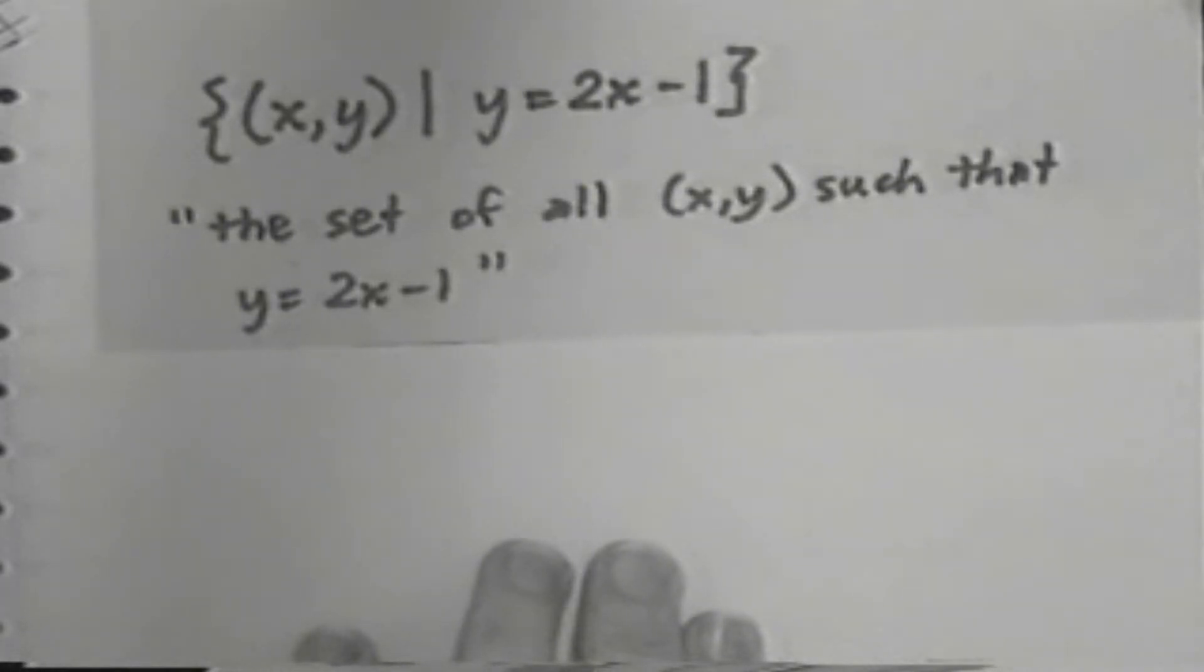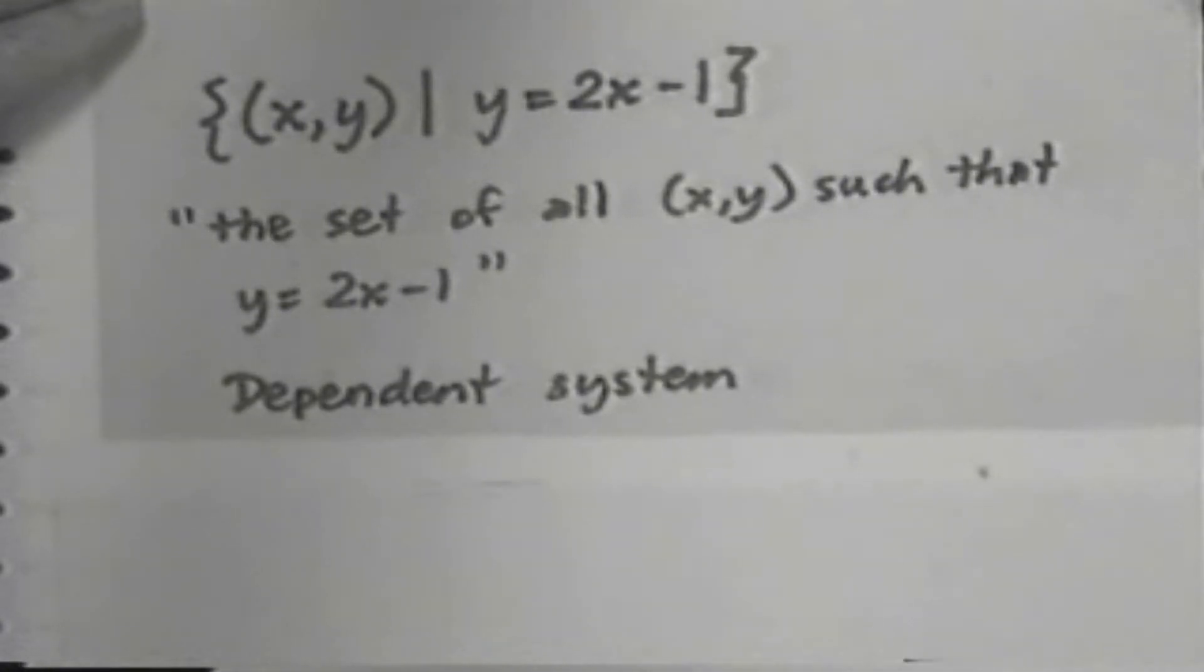When the two lines coincide and we get this infinite set of answers, the system is called dependent. Well, it certainly is dependent. Each line depends on the other because they're exactly the same thing. This is an example of a dependent system.